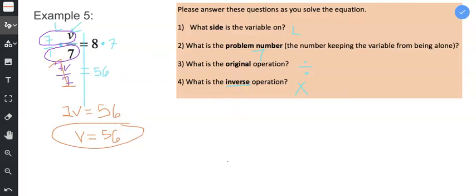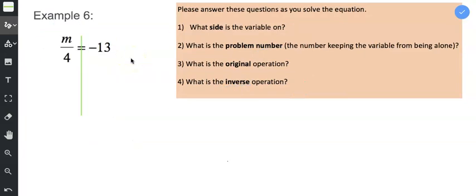Let's try another problem. Example 6. What side is the variable on? The variable is on the left side. You see the M over here on the left. What is the problem number? Well on the left side the 4 is what is keeping the M from being alone.